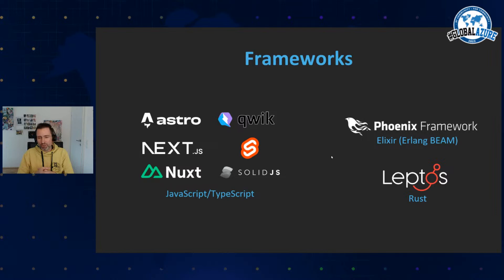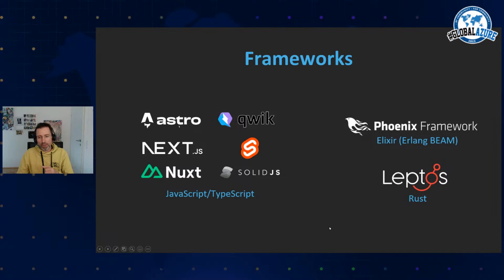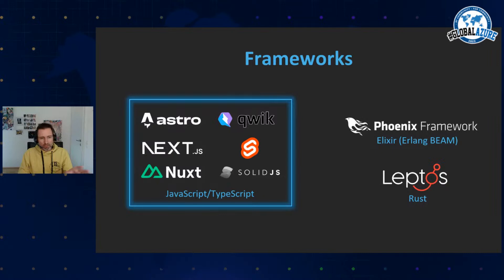You can also use Rust nowadays — for example, Leptos with Axum on the backend. In this case, you have server-side rendering in Rust, and on the client side the Rust is compiled to WebAssembly to generate the DOM again. There's a lot happening in the Rust space as well. Today we're going to focus on the JavaScript frameworks mostly.